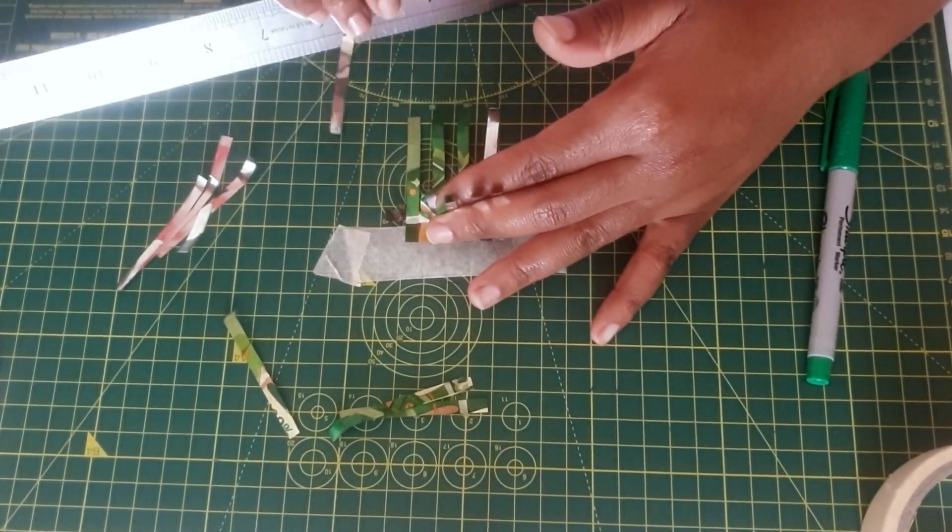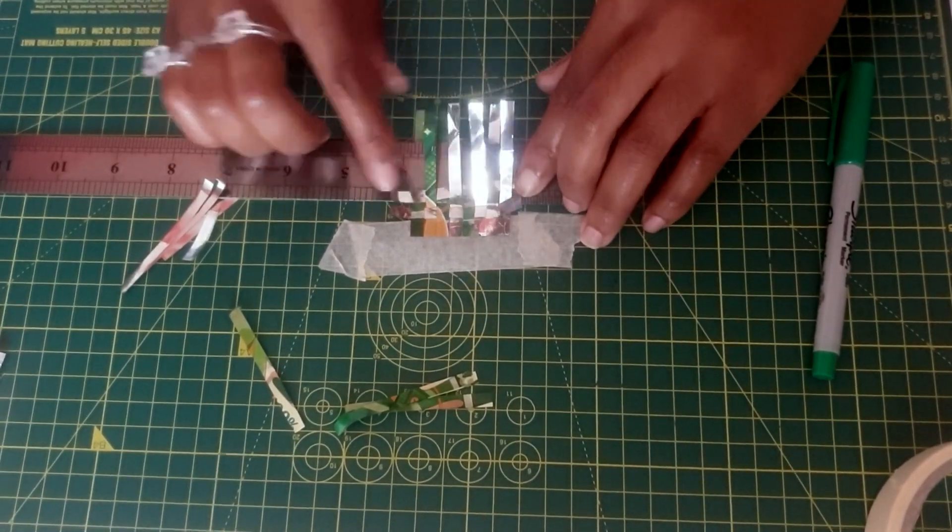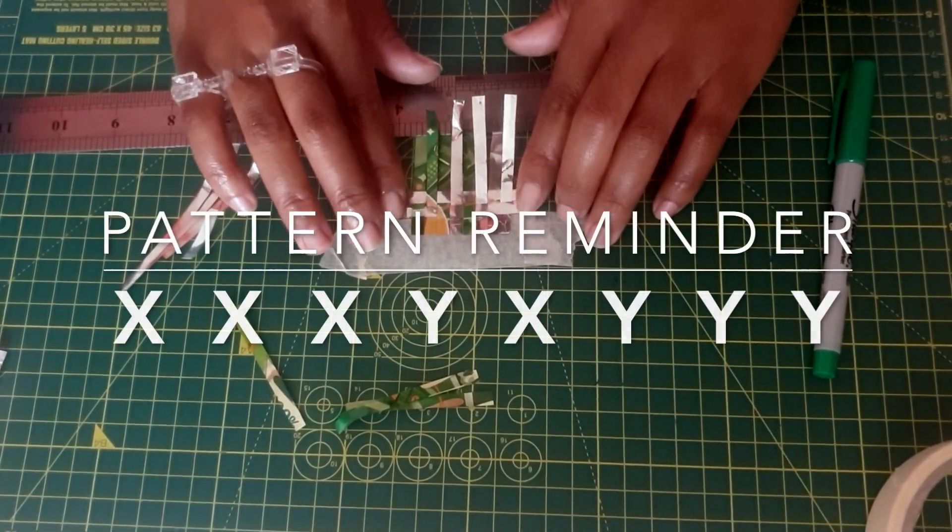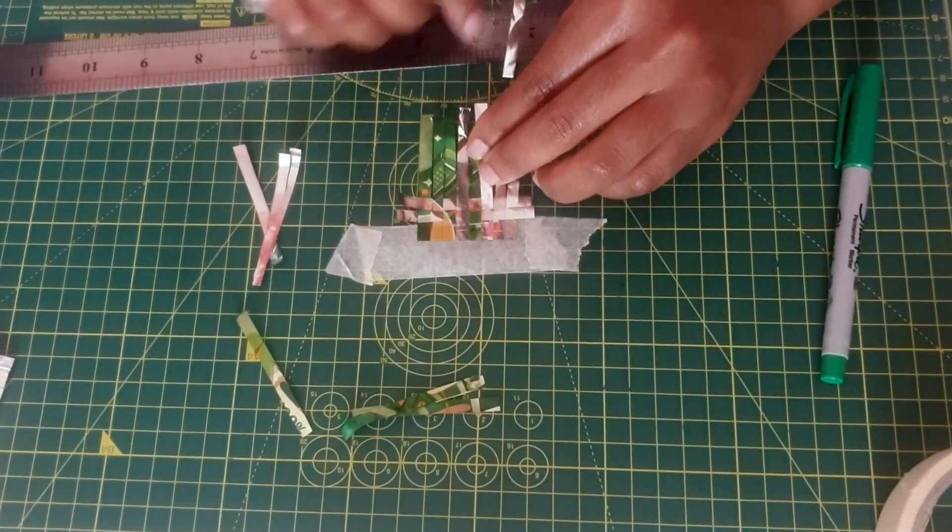Remember for your weft strips, that's the strips going across, they too will be representing the pattern of silver, silver, silver, green, silver, green, green, green.